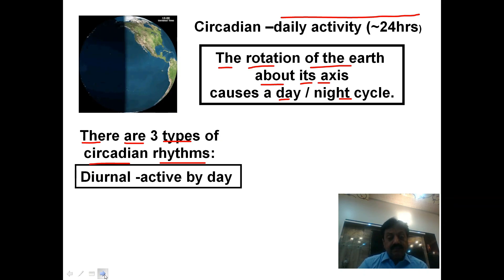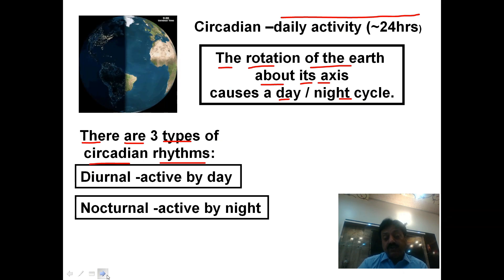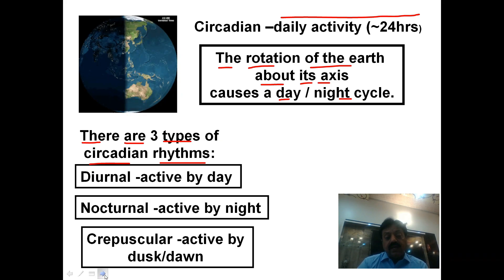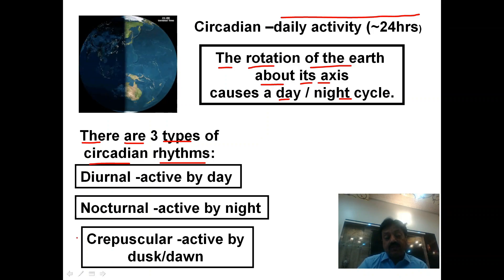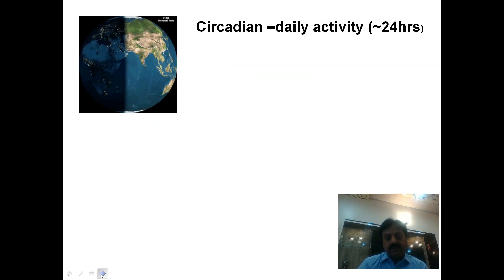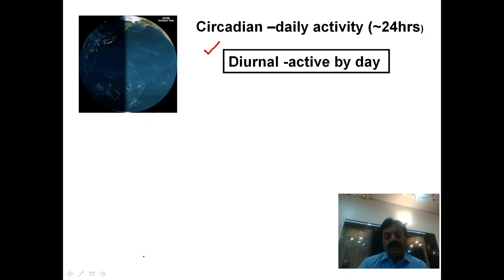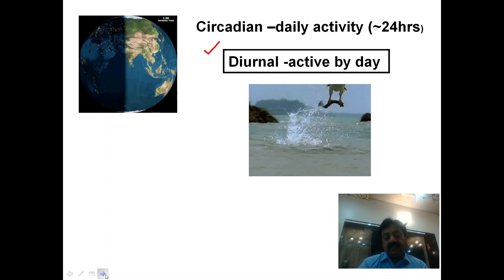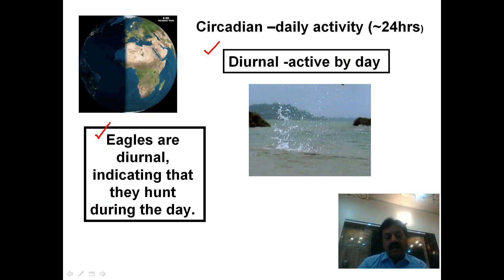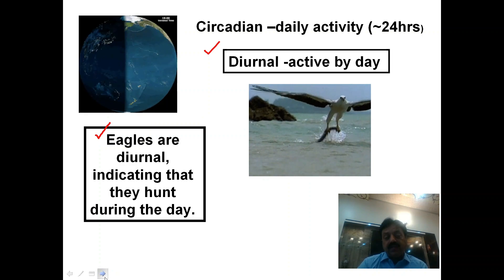Diurnal activity means the animals which are active by day in the 24-hour cycle. Number two is nocturnal, active by night. Number three is crepuscular, active by dusk or dawn.